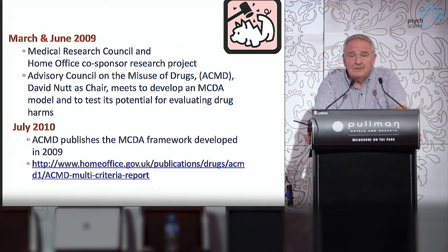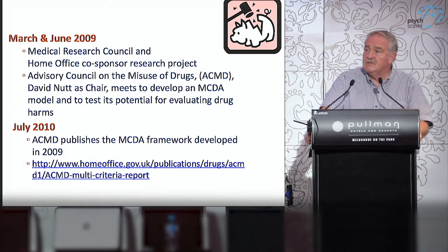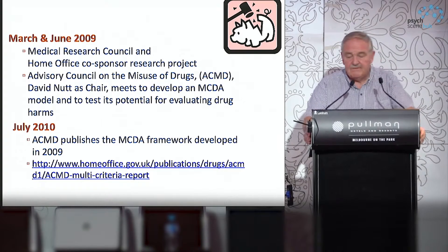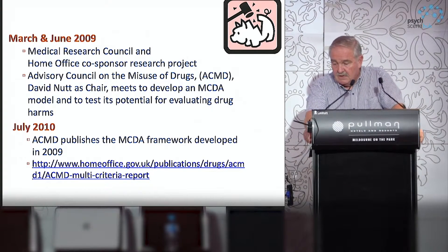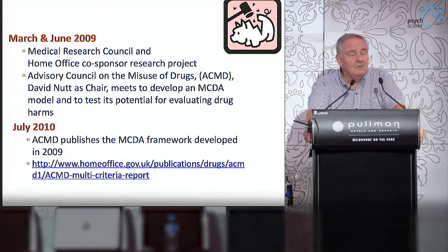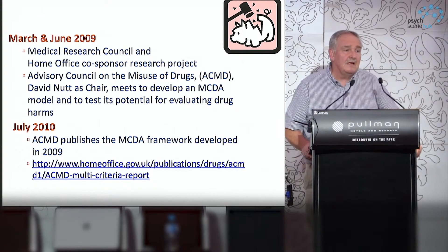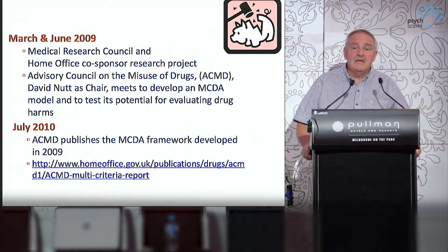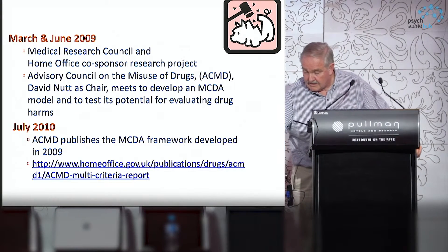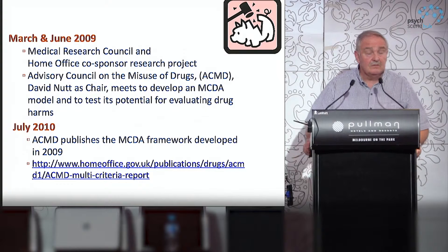There were about 3,000 of these Post-its, and we stuck them on the wall. The next day we sorted them into the minimum number of variables, and it turned out that it came down to 16 separate variables, which I'll show you on the next slide. We then spent the remainder of that conference working out how to define each of the variables, because without definitions it's very hard to do the ratings.